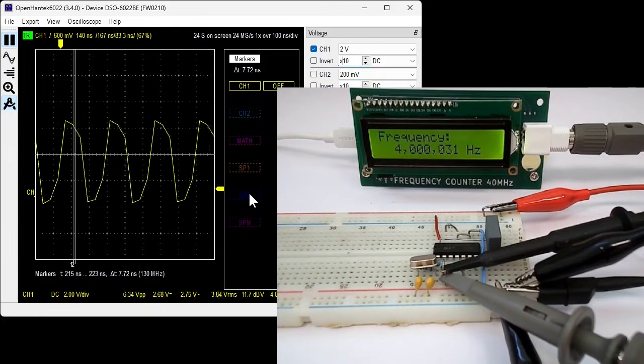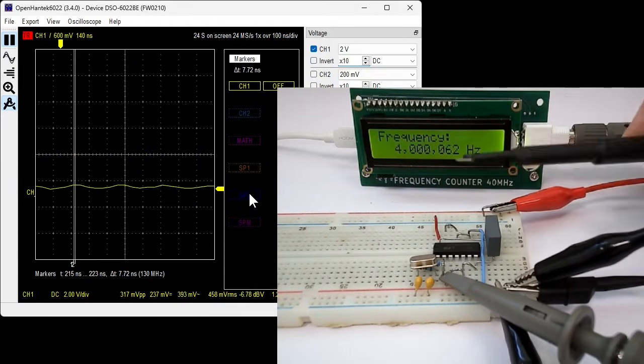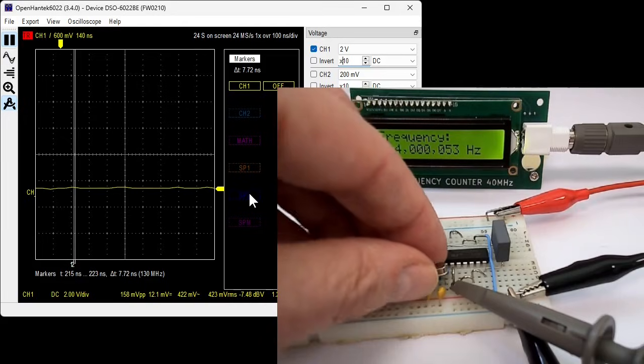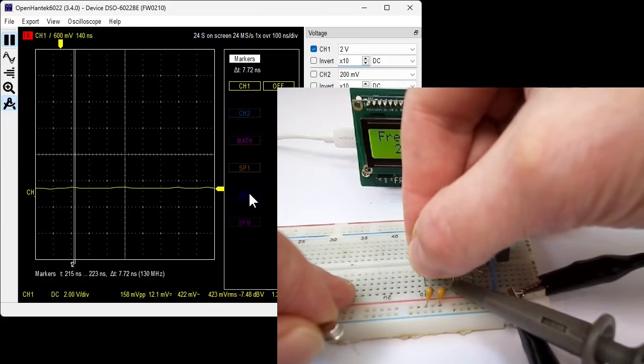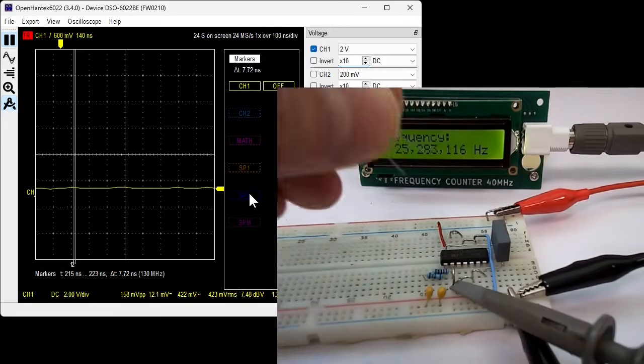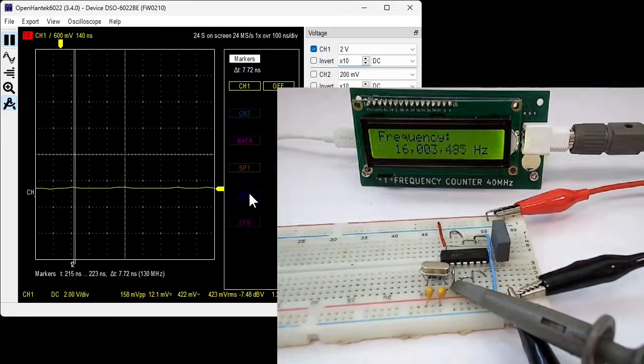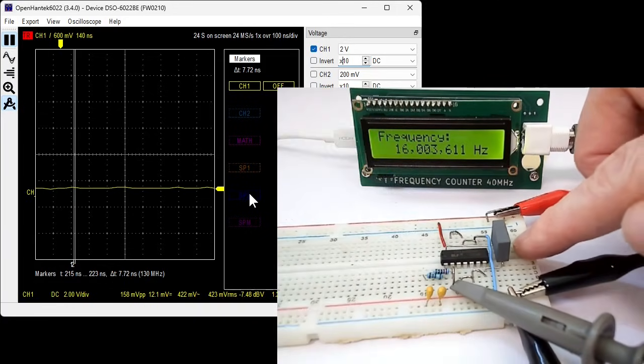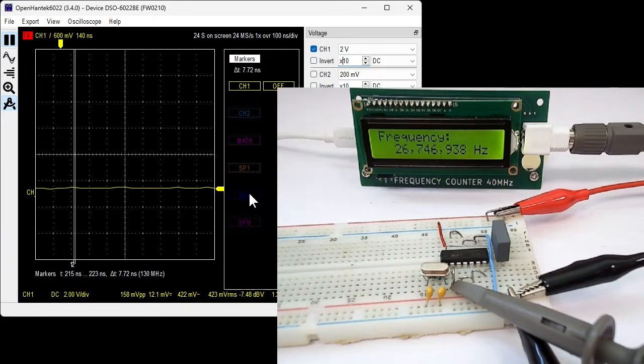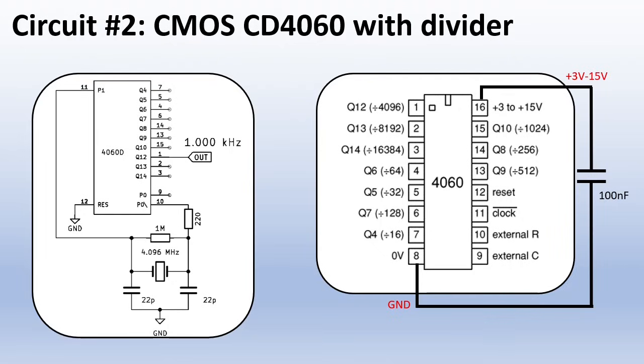I will disconnect my oscilloscope as it cannot display such high frequencies anyway. Now it is 4 MHz. That works. Let's try 8 MHz. Okay, that works well. Let's go up to 16 MHz. This circuit is based on the CMOS logic IC CD4060.